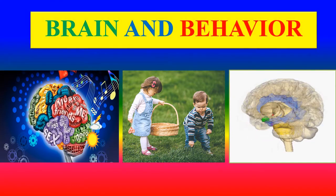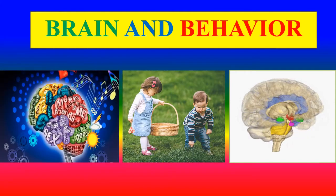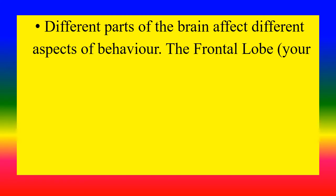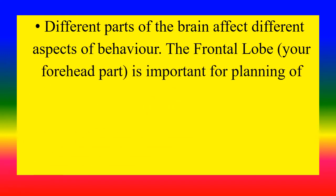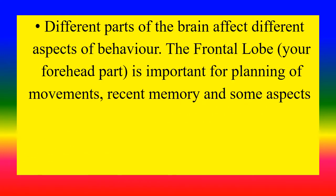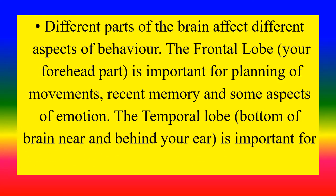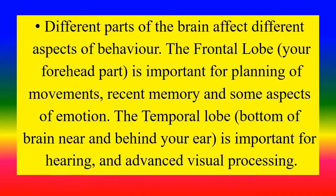Next section: Brain and Behaviour. Different parts of the brain affect different aspects of behaviour. The frontal lobe, the forehead part, is important for planning of movements, recent memory, and some aspects of emotion. The temporal lobe, at the bottom of the brain near and behind your ear, is important for hearing and advanced visual processing.